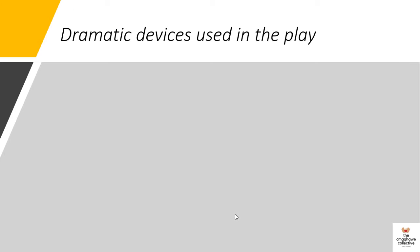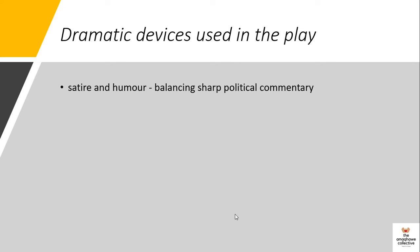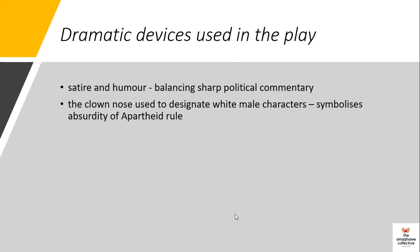Now looking at the dramatic devices used in the play — and this is very important for any question related to Woza Albert. The play uses satire and humor as a mechanism to balance sharp political commentary, because this play goes deep with the politics. This play is hilarious — one of the best plays. The clown nose is used to designate white male characters, and the clown symbolizes something hilarious, funny, and absurd — reinforcing the absurdity of apartheid rule.